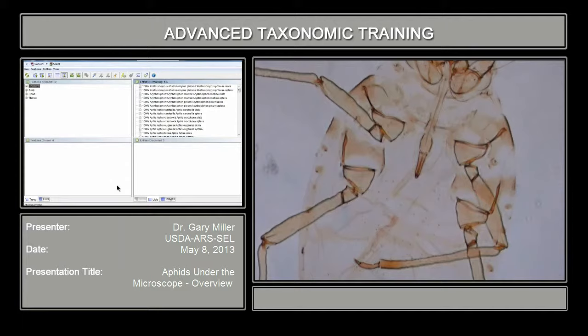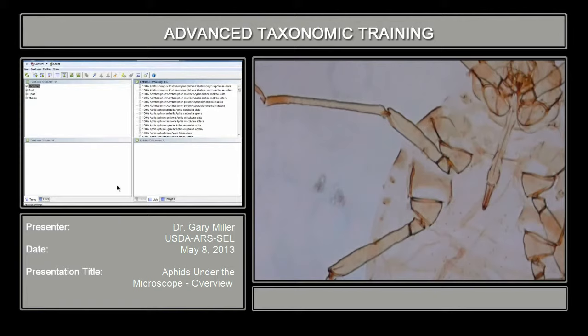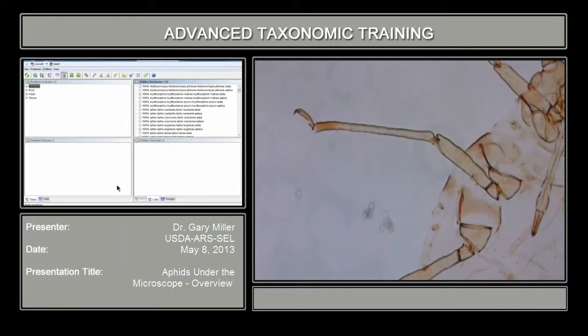Looking at the legs, you also have measurements of the legs, and you'll have to take a look at the chaetae (CD). The measurement of the CD are sometimes used or beneficial for identification. The length of the CD — sometimes you'll do the ratio of the length of that CD to the base of the femur.